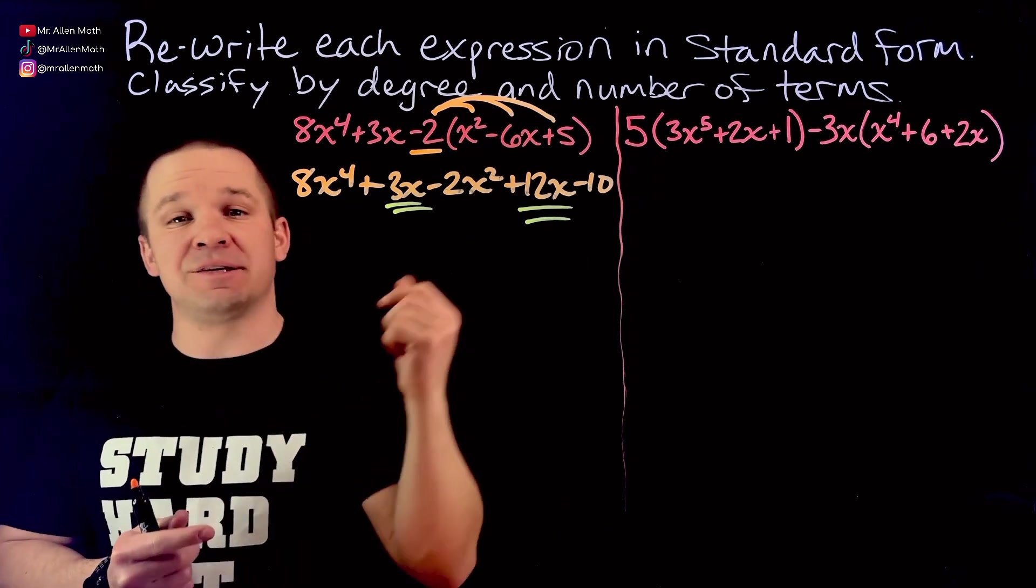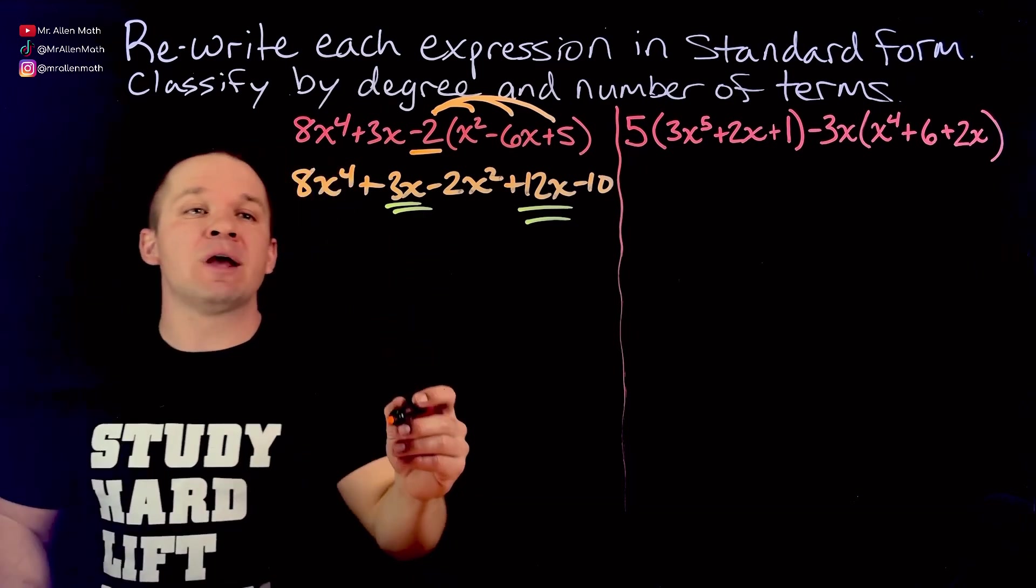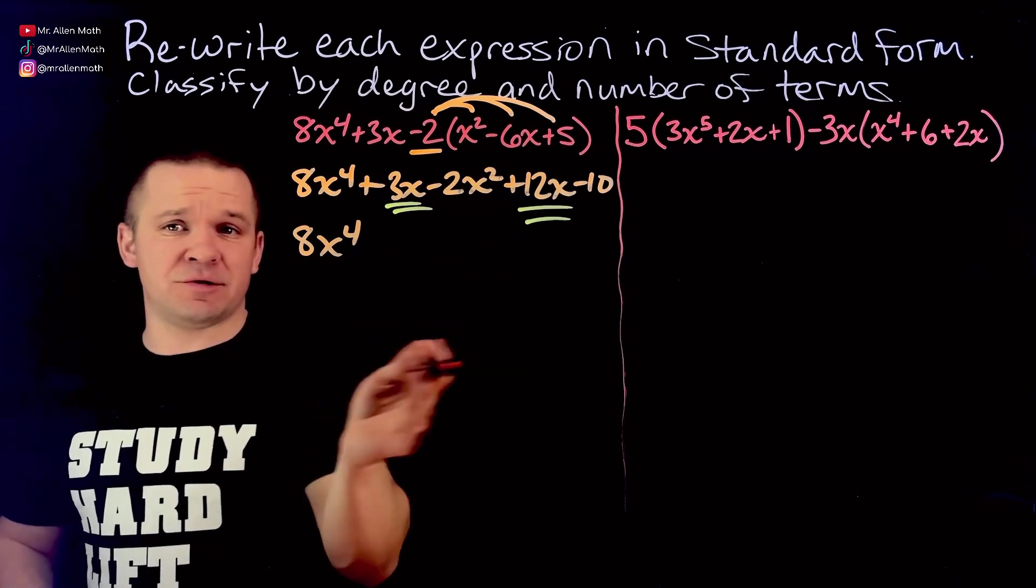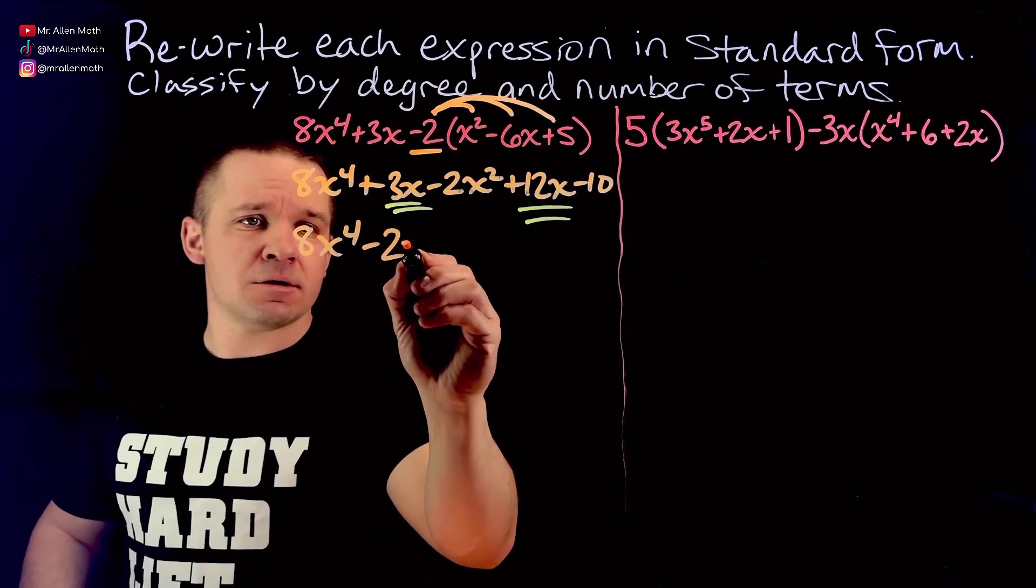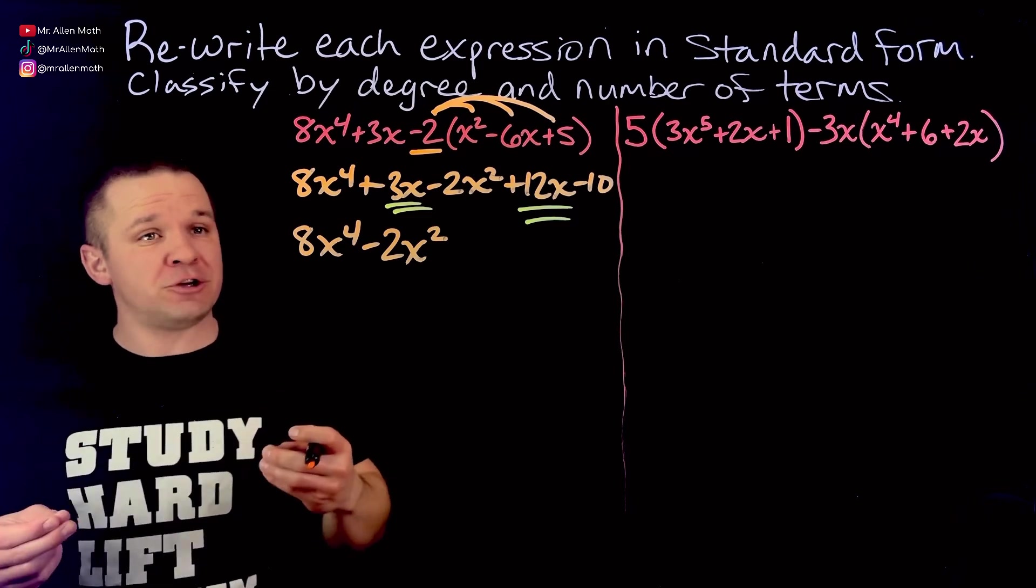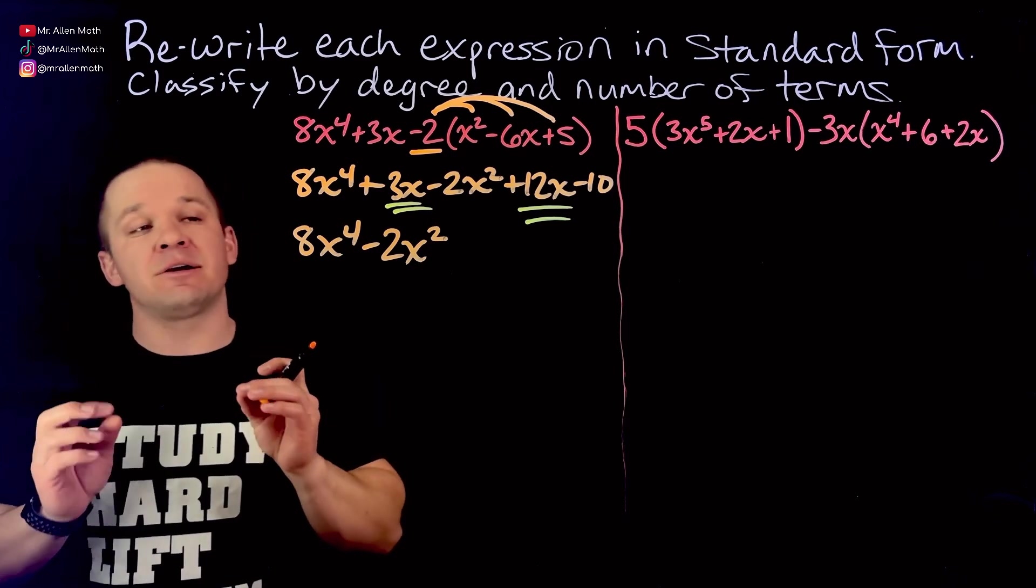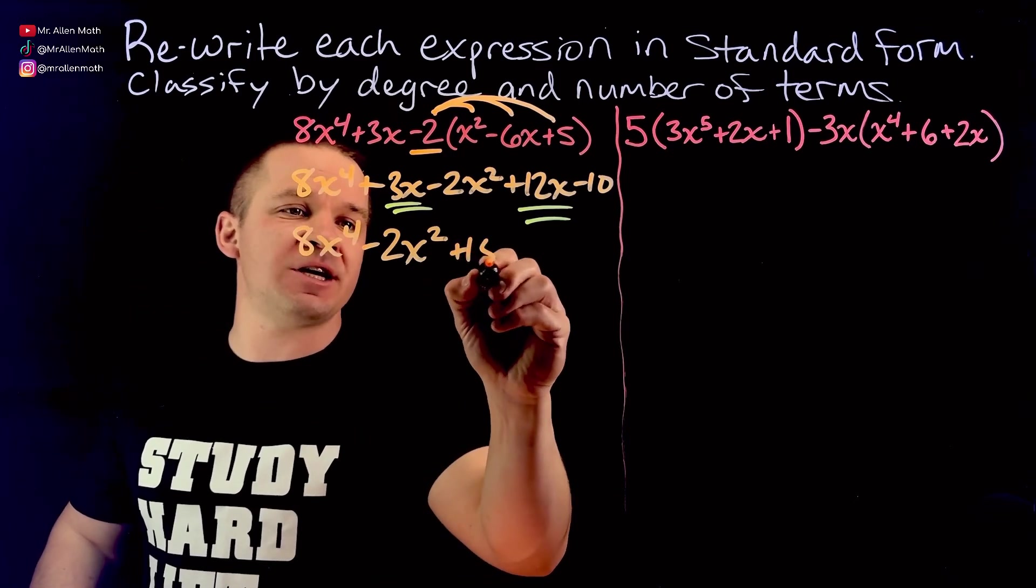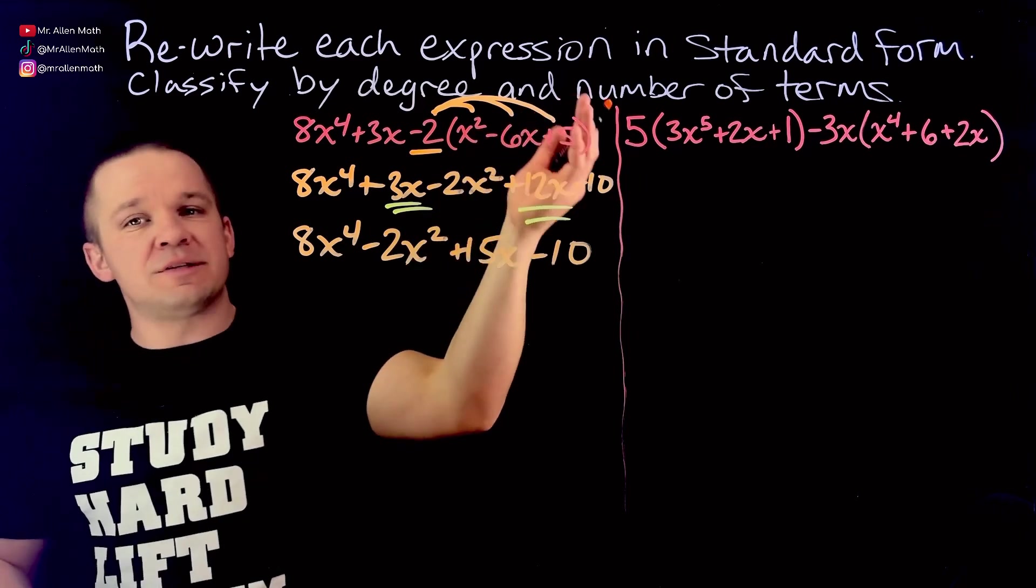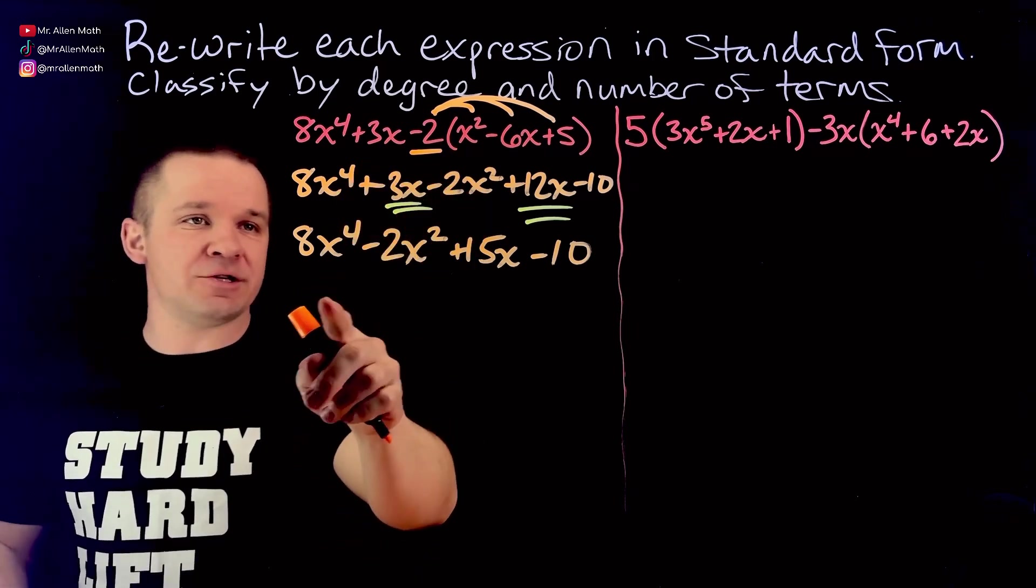So this is going to multiply to all three terms, leading me with 8x to the fourth plus 3x and then it's minus 2x squared. And then negative 2 times negative 6 is positive 12x and then minus 10. Now we can combine some like terms and it can help to put a little underline under your like terms here.